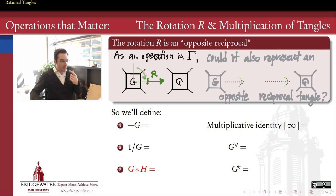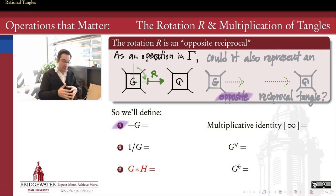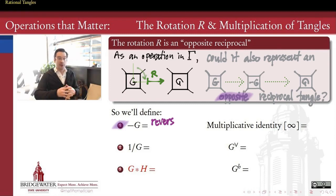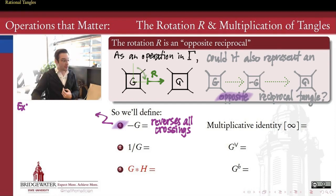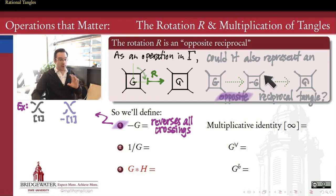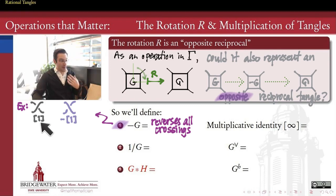Can we divorce the opposite and the reciprocal in a way that, done in succession, we end up getting this simple rotation? We'll think of the opposite step first, defining it the same way we did in the introduction to the semester: taking the opposite of a tangle simply reverses all the crossings, just like taking the opposite of a knot reversed all crossings from overs to unders. That's going to be the secret first step in taking an opposite reciprocal. Then the second step — the reciprocal part — is whatever is necessary to complete the process of getting us the rotated tangle.